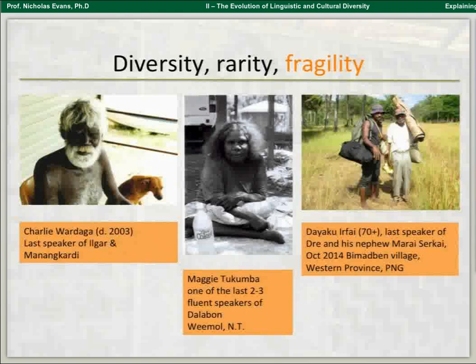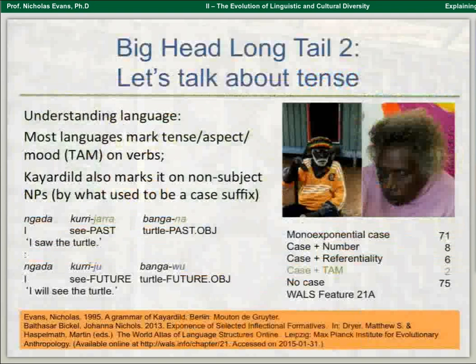What's the linguistic equivalent? Linguists get turned on by this. Let's talk about tense. If we look across the languages of the world, it's very common to mark tense, aspect, and mood, and we tend to assume that it will be marked on verbs if we do it in the inflectional morphology.